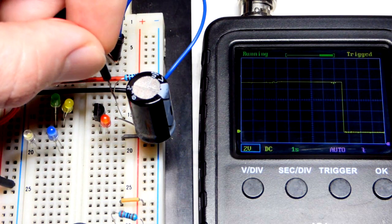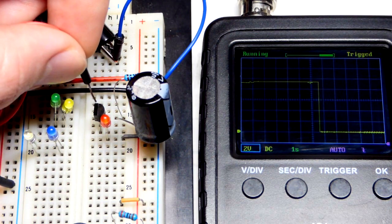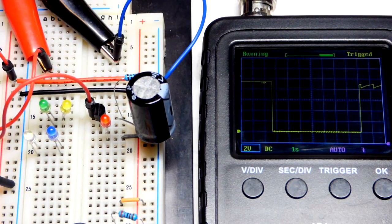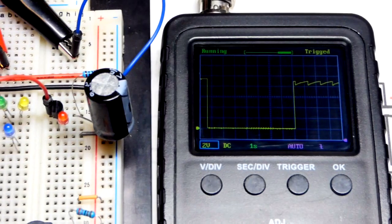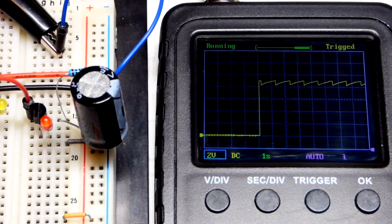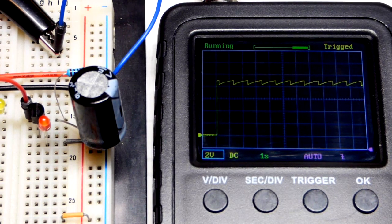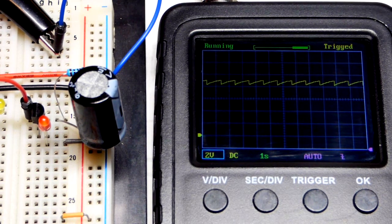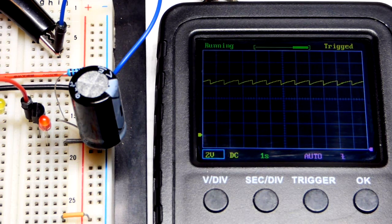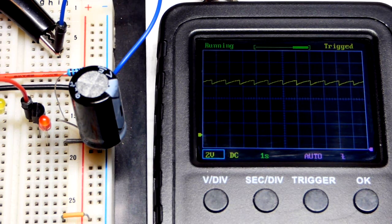Now we're going to go to where the capacitor, the emitter of the transistor, and the resistor come together. That is much more interesting. You can see the waveform. The capacitor is charging to about 8, looks like 9 volts almost, and then dropping down to 8. That's what it looks like there.